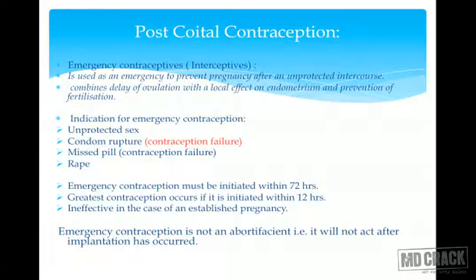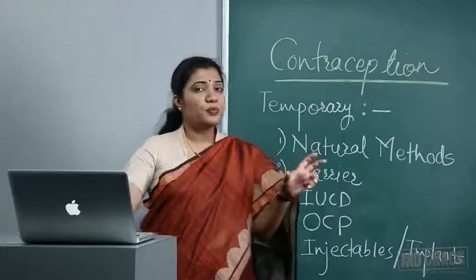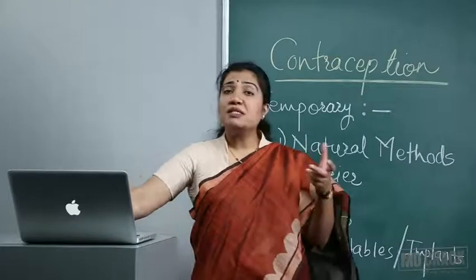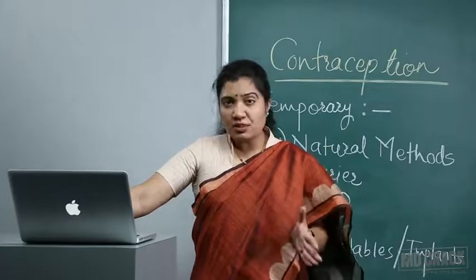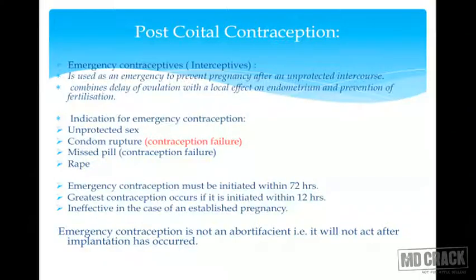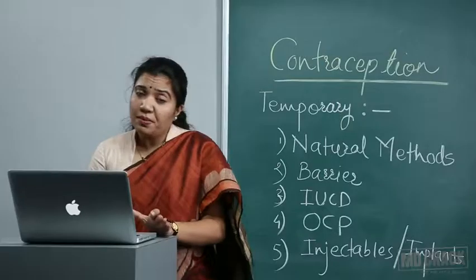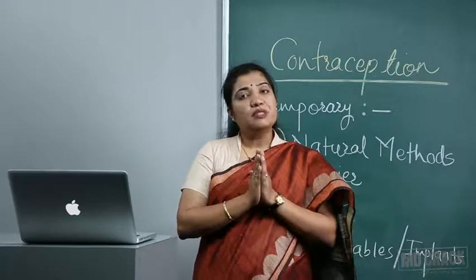Emergency contraception must be initiated within 72 hours of unprotected coitus. If an MCQ asks for the best action, the answer is within 12 hours. The requirement is within 72 hours, but it is more effective if initiated within 12 hours.